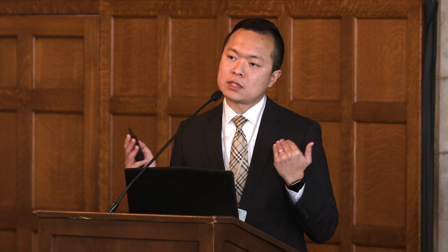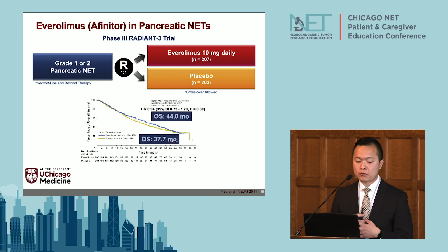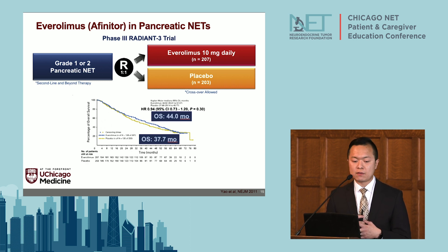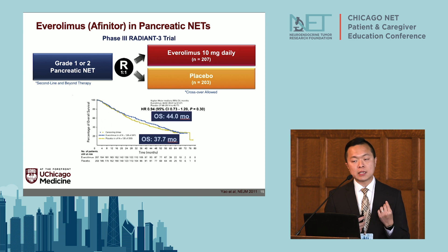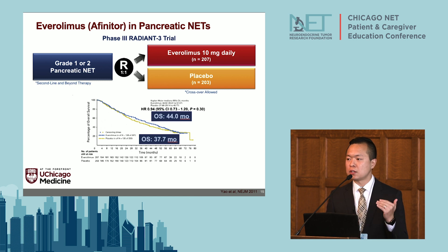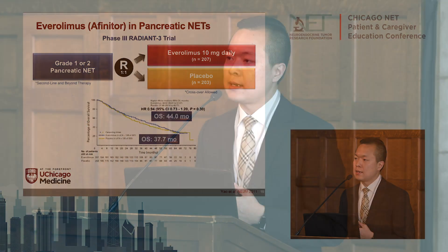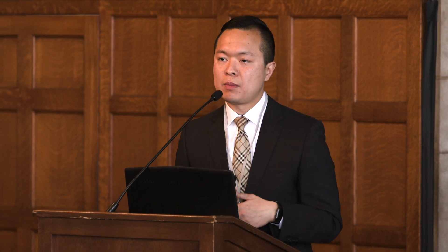In this trial, they followed patients long enough to assess overall survival. Patients treated with everolimus had an overall survival of 44 months versus 37 months in the placebo group. Of note, this study allowed for crossover, meaning patients on placebo whose cancers progressed were able to cross over to the everolimus arm. In general, crossover dilutes the overall survival benefit, so the true survival benefit may actually be greater.